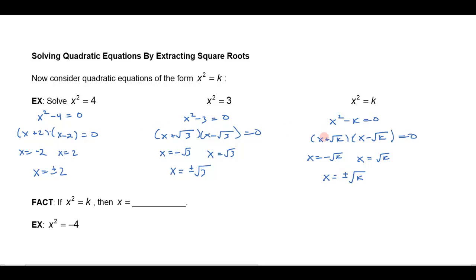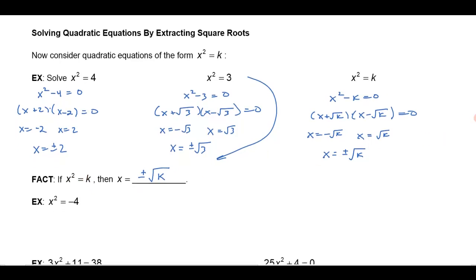After you've seen that three times it becomes pretty obvious that if x squared equals a number, rather than going through all those steps, I could just skip right down and say x equals plus or minus the square root of the number. So if I have x squared equals k, then x is going to be plus or minus the square root of k.